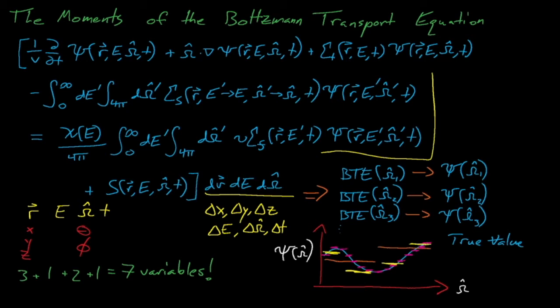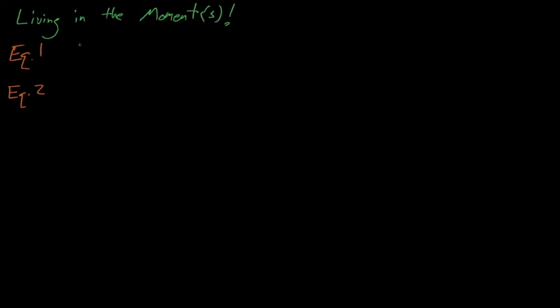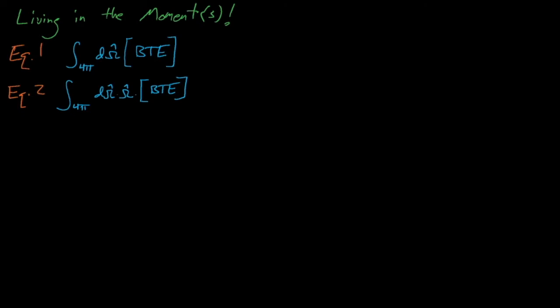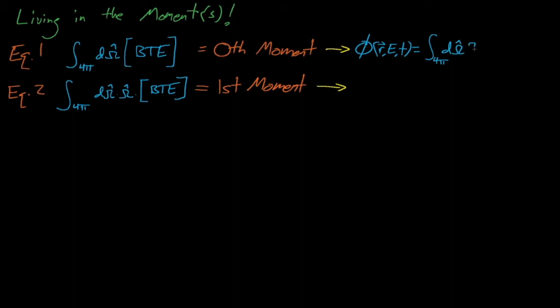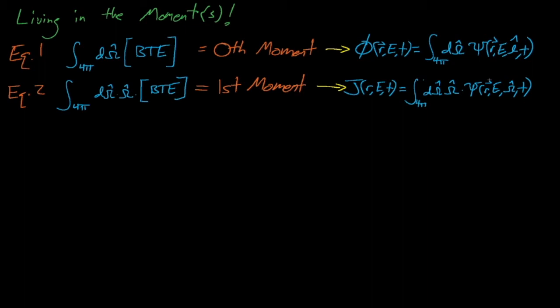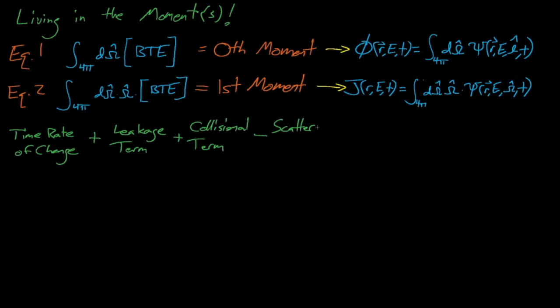Getting back to the diffusion equation, we can derive it by taking the zeroth and first moments of the Boltzmann transport equation with respect to the omega variable. The zeroth moment takes the integral of the Boltzmann transport equation multiplied by omega to the zeroth power, which equals 1. The first moment integrates the equation after it's been multiplied by omega to the first power. When taking these moments, it will be helpful to recall our definitions for the scalar flux and the current density. The scalar flux is the zeroth moment of the angular flux, and the current is the first moment of the angular flux. We'll use these definitions extensively in our derivation. As we take the moments, we'll divide our work so that we take the moments of each of these six terms in the equation separately.